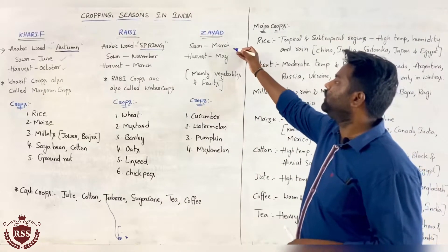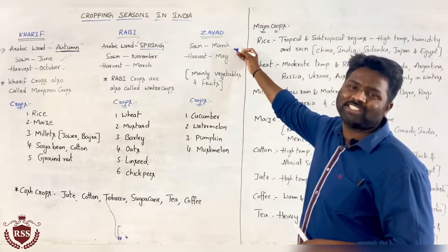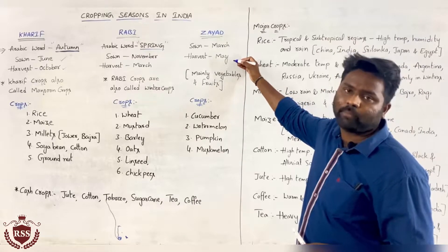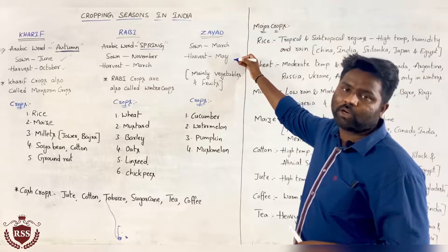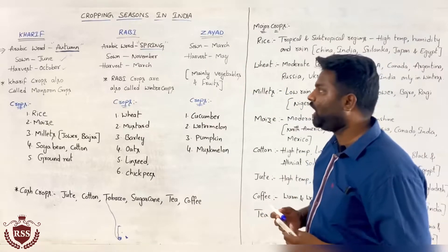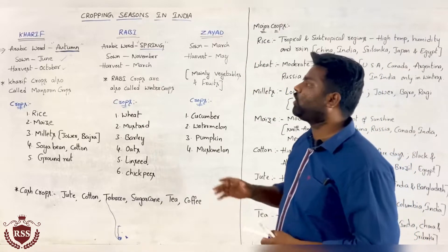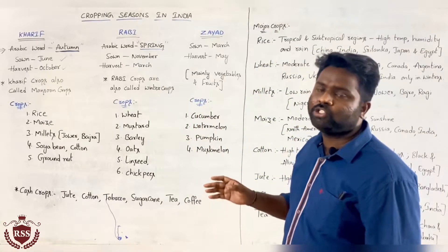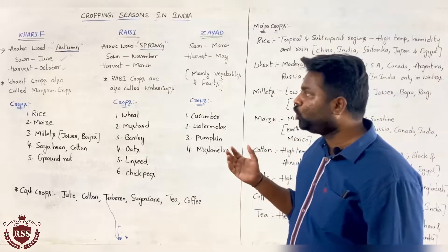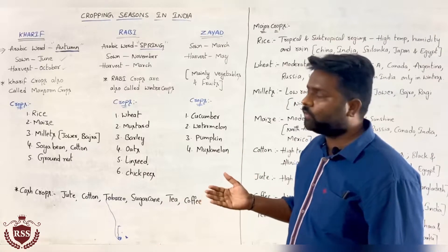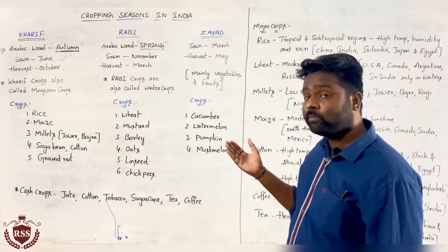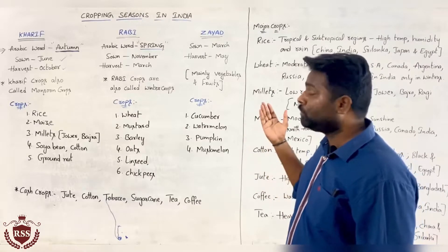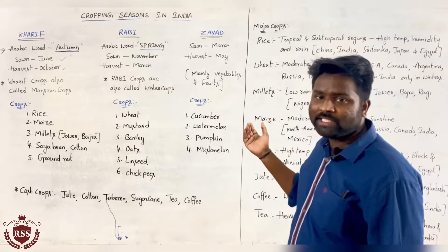In the same way, from March to May, in the month of May they are harvesting the crop. From March to May we are calling it the Zayad season. So there are three cropping seasons in India: Kharif from June to October, Rabi from November to March, and Zayad from March to May.